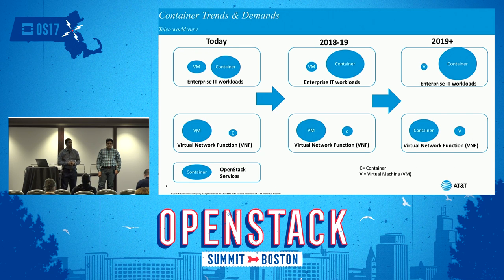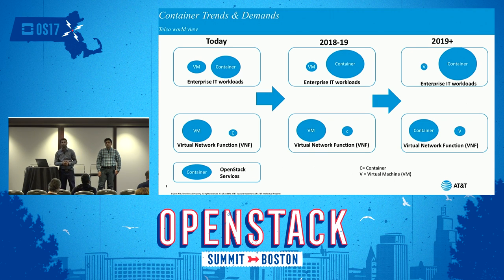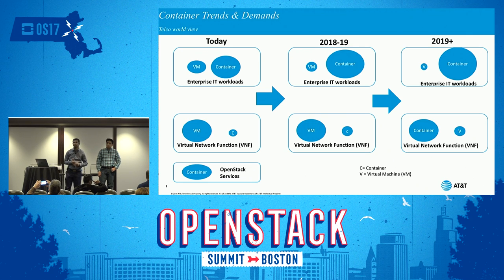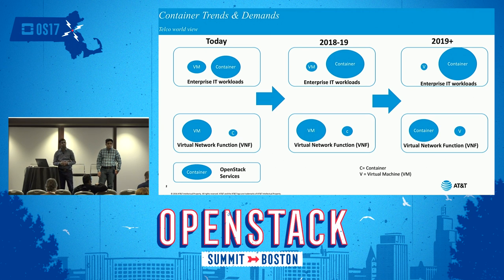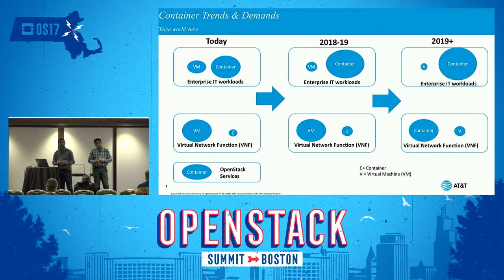If we look at network virtual functions, this is the area that needs a lot of work to make containers adopt the functionality served by network virtual functions. For example, a firewall, load balancer, or routing functionality in a telco application — as of today, very few network virtual functions are running as containers. It's picking up, but most of them are still virtual machines. When we go to the trend of 2018 and 2019, this is definitely going to change, and containers will become more prominent.